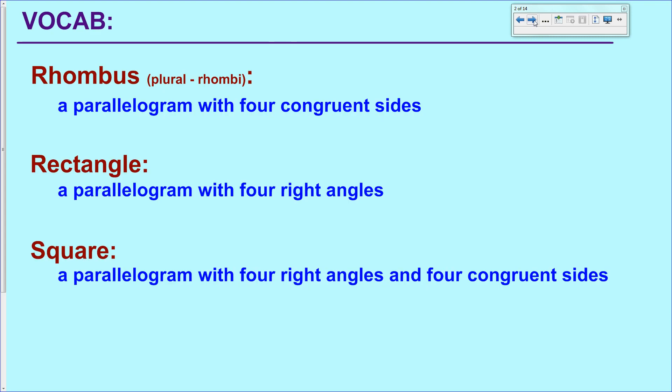We're going to start off with the second day of 8.4, talking about the official definitions for rhombus, rectangle, and square, three of the quadrilaterals that we've been dealing with in class.